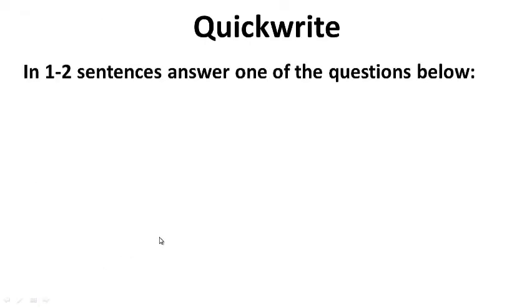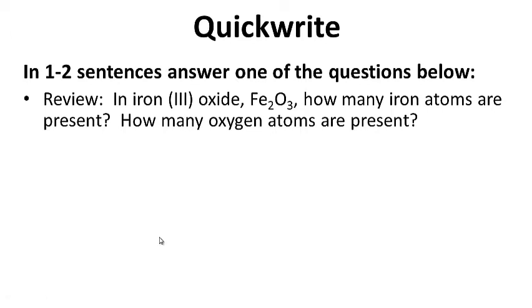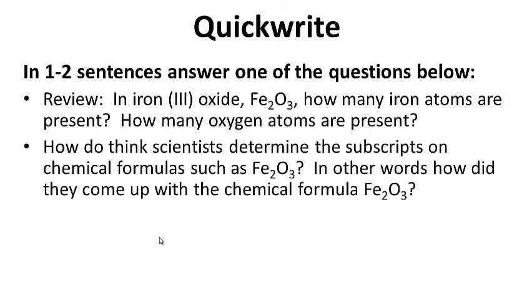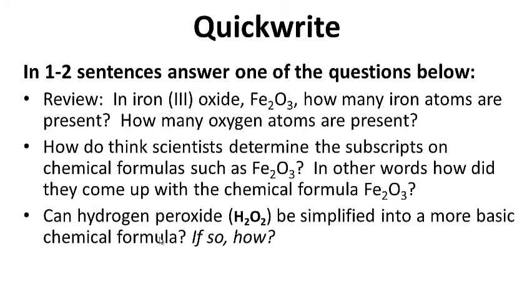For your quick review: in the compound iron oxide Fe2O3, how many iron atoms are present? How many oxygen atoms are present? How do you think scientists determine the subscripts on chemical formulas such as Fe2O3? In other words, how do they come up with the chemical formula in a lab for Fe2O3? And can hydrogen peroxide, H2O2, be simplified into a more basic chemical formula? If so, how? Go ahead and pause this while you do your quick write.